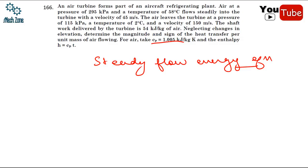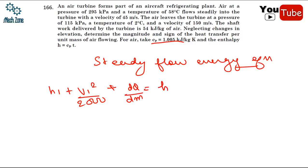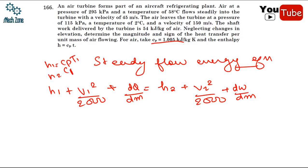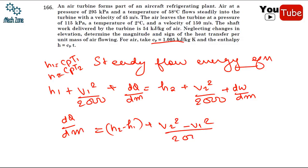This is a very simple question where we simply have to apply the steady flow energy equation. We will first write down the steady flow energy equation: h1 + V1²/2000 + dq/dm = h2 + V2²/2000 + dW/dm. We are writing in terms of mass. Here h1 = Cp·T1 and h2 = Cp·T2.